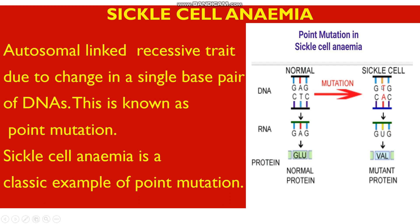In sickle cell anemia, the DNA base pairs are GTG and CAC, because the adenine of the normal gene is replaced by thymine. The mRNA synthesized from this mutant DNA is GUG — using uracil in place of thymine. GUG does not code for glutamic acid; instead, GUG codes for the amino acid valine. So this is a mutant protein.